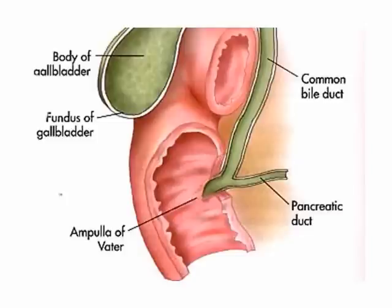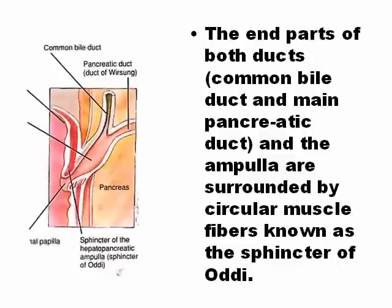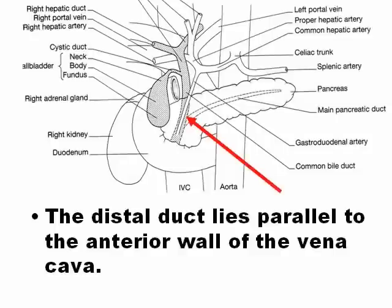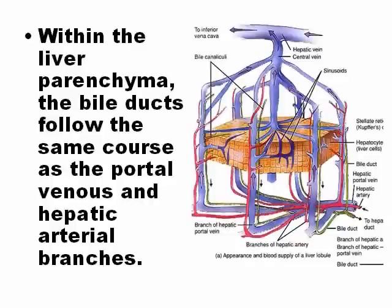The duct finishes in the second portion of the duodenum. The end part of both duct and the ampulla are surrounded by circular muscle fibers — the sphincter of Oddi. The ampulla of Vater finishes in the sphincter of Oddi. The distal duct is anterior to the inferior vena cava. The portal venous branch and the hepatic artery branch are together with the bile duct branch. This is called the hepatic triad.